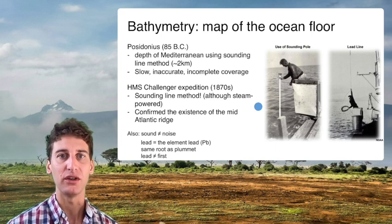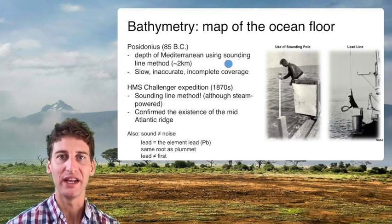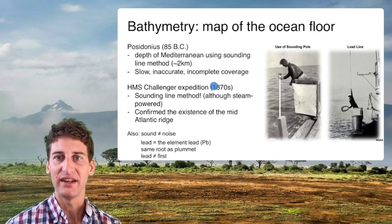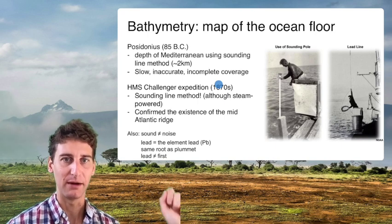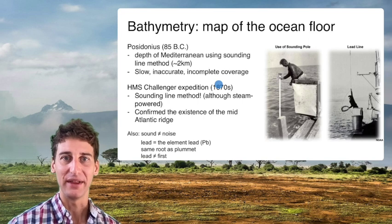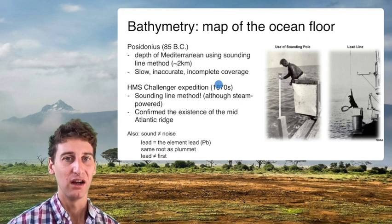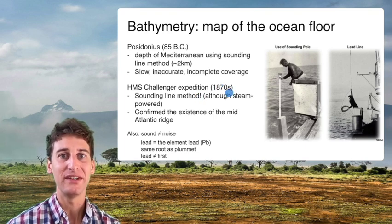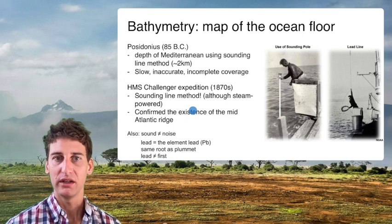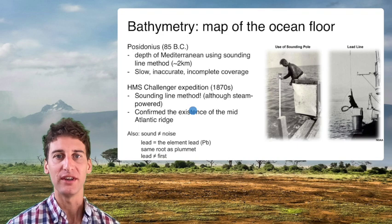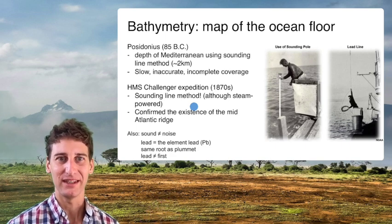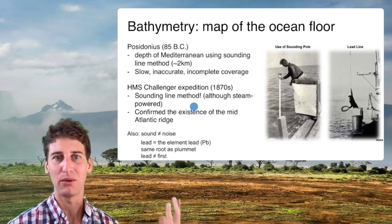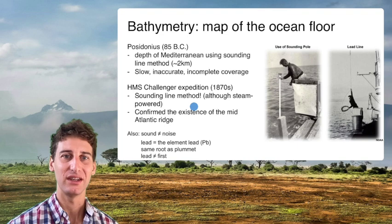One of the first measurements of the deep ocean was in the Mediterranean using something called a sounding line — essentially a long rope with a weight at the end. You lower it down, the weight feels the ocean bottom, and you measure how much line has been put out. This was the way ocean depths were measured for a long period of time, up until the 1870s. The first global mission to measure ocean depths was the HMS Challenger expedition in the 1870s, still using this sounding line method. If you're in a part of the ocean that's 4,000 meters deep, you're pulling in miles of rope.